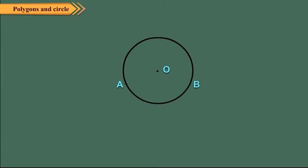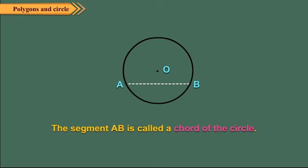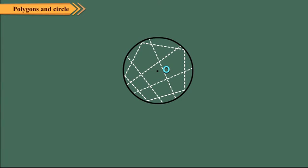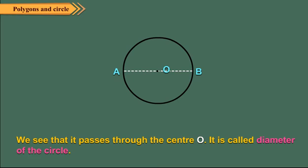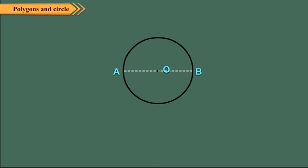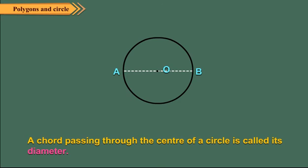Take any two points A and B on a circle and join them. The segment AB is called a chord of the circle. We can have an infinite number of chords in a circle. Observe the chord AB of the circle — we see that it passes through center O. It is called the diameter of the circle. A chord passing through the center of a circle is called its diameter. Since the diameter AB is made up of two radii OA and OB, the diameter is twice the radius. Also, the diameter is the longest chord of a circle.